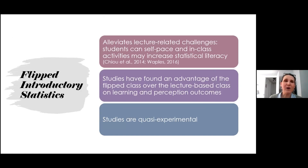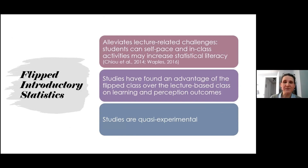A small handful of studies have found an advantage of the flipped class compared to the traditional class for intro stats on both perceptions and attitudes as well as learning outcomes. However, these studies are all quasi-experimental in that important features of the class are kept consistent across both sections, such as the day and time of the class, the semester, and the instructor.